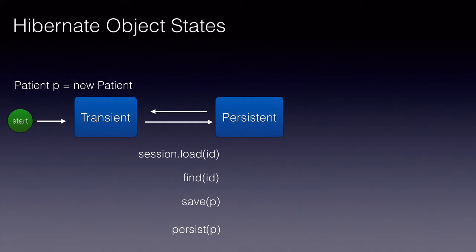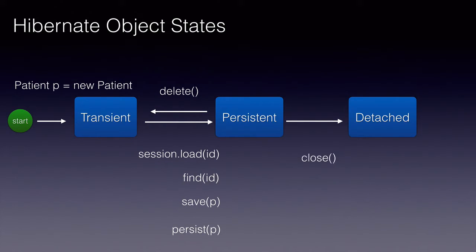If the delete method is invoked on a persistent object, it will go back to the transient state. And as soon as the session that it is associated with is closed by invoking close, clear, or evict on the session, it will move to the detached state.